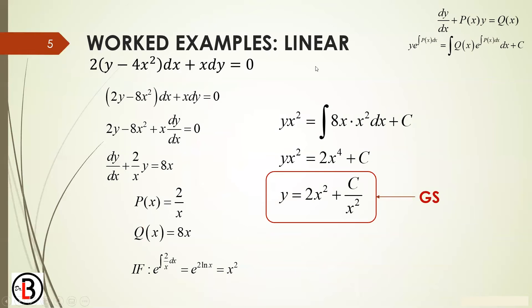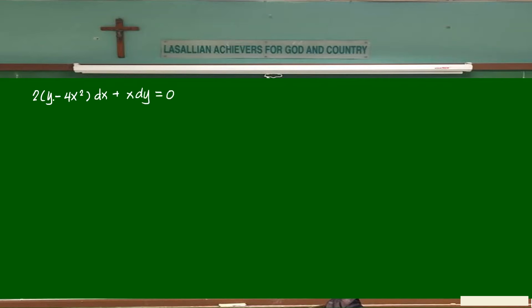Given. So in this case, when you check, it's not variable separable. Definitely it's not, because they're together in one line. Is it homogeneous? Definitely not, because first degree, second degree. Is it exact? Let's see. Partial of M with respect to y is what? Partial of N with respect to x is? 1. Therefore, it's not exact as well.